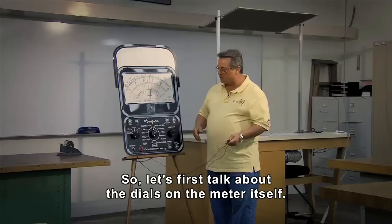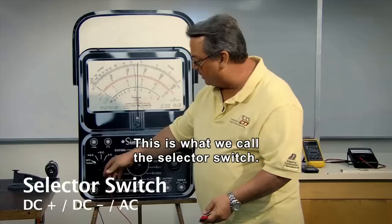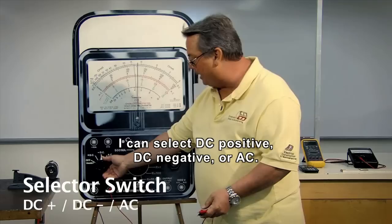So let's first talk about the dials on the meter itself. This is what we call the selector switch. I can select DC positive, DC negative, or AC.